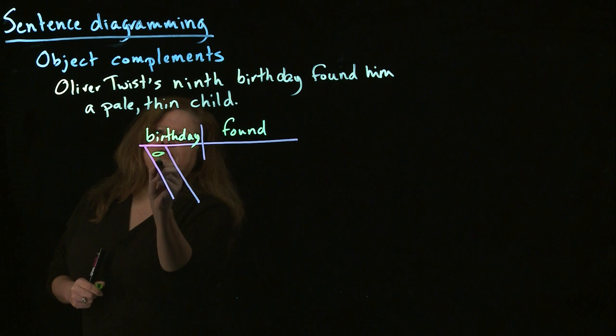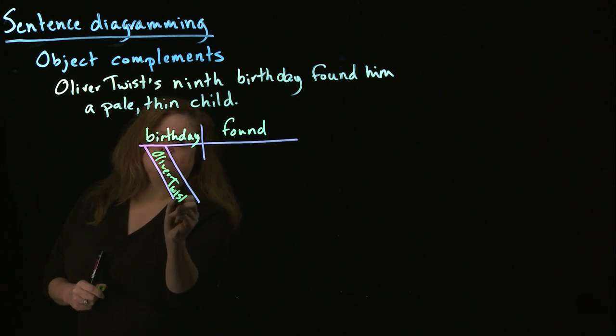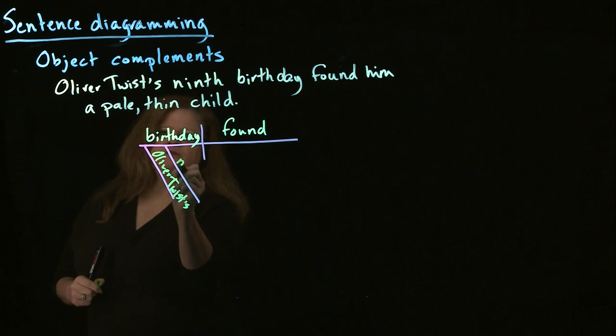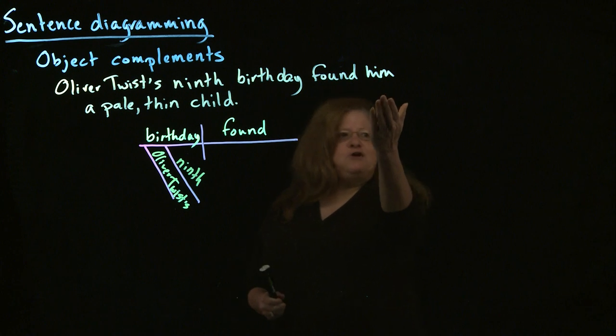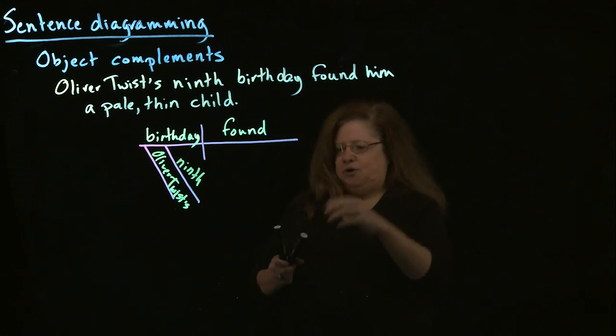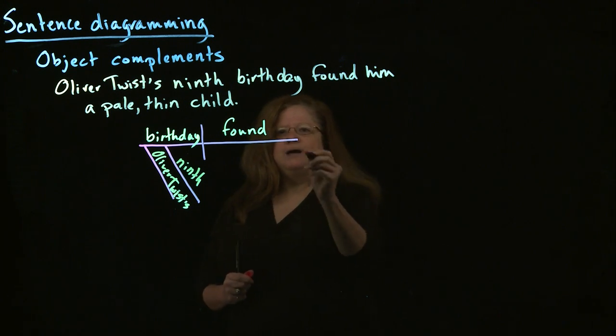So, we have Oliver Twist's ninth birthday, found. Okay, it found him. Him, now, is a direct object. He is being found.